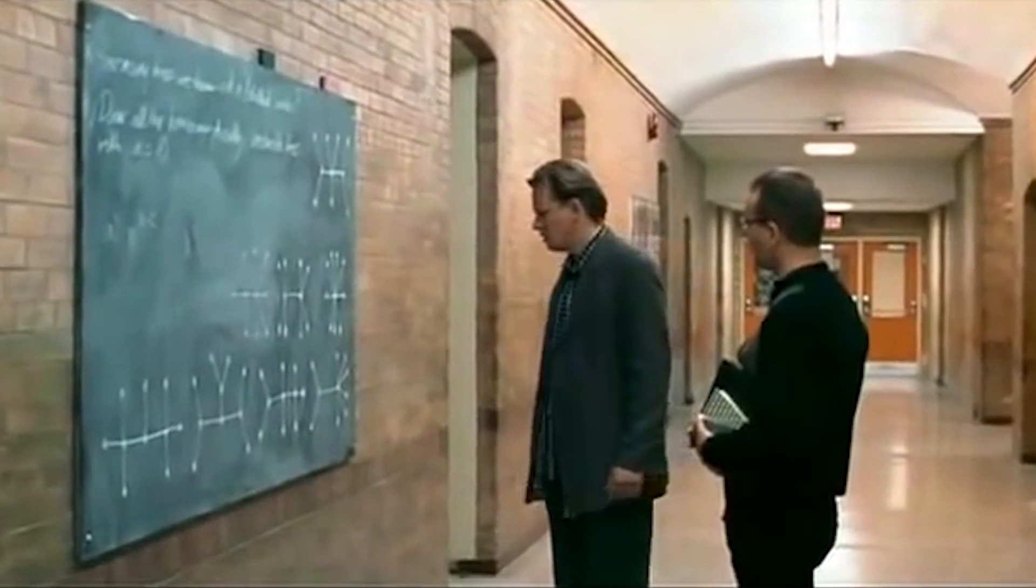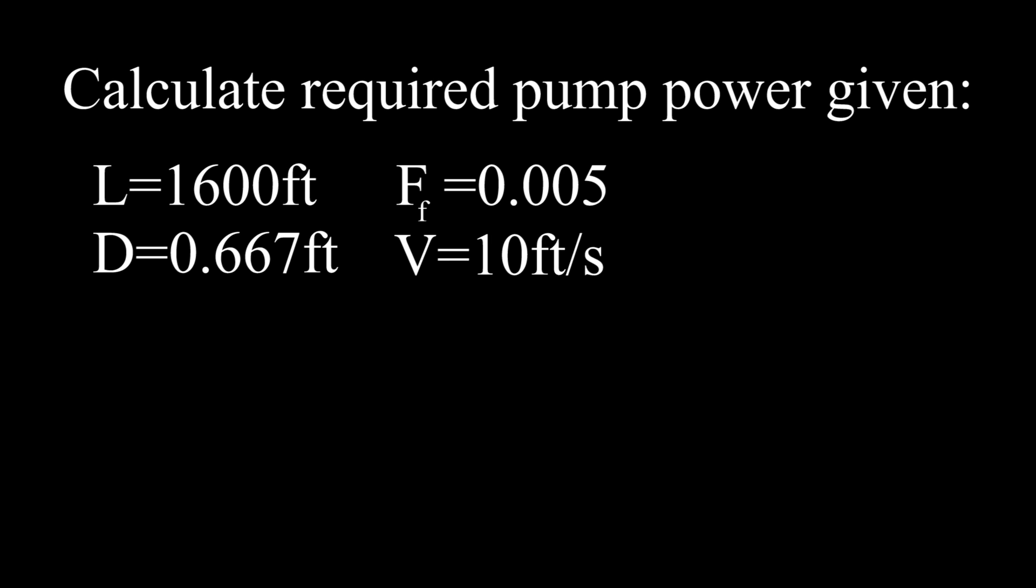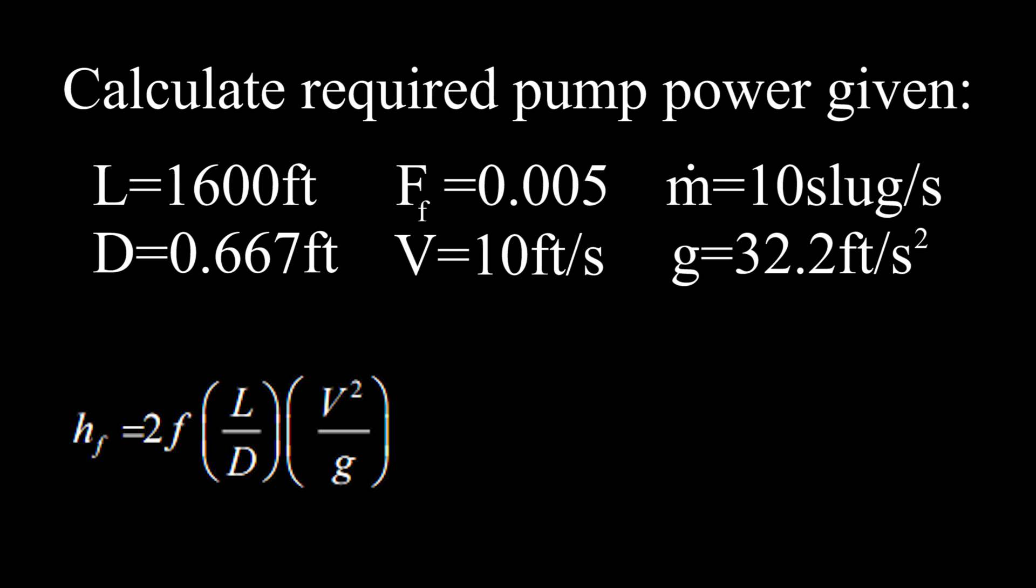Here's an example in fluid dynamics. Suppose your task is to calculate the power of a pump required to drive a liquid through 1600 feet of 8 inch pipe. If our friction factor is 0.005, average pipe velocity 10 feet per second, mass flow rate 10 slugs per second, and acceleration due to gravity 32.2 feet per second squared. All we need to do is calculate head loss from this equation and multiply that product by the mass flow rate and acceleration due to gravity once more.